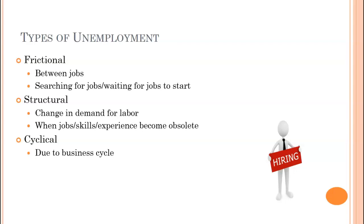Cyclical unemployment is due to the business cycle. During downturns there aren't enough sales, so employers let go of people hired last — that's typical cyclical unemployment. The last type is seasonal unemployment: the official unemployment rate is seasonally adjusted, so this isn't really taken into consideration. Examples include agricultural workers during the off-harvest season, teachers in summer, lifeguards in winter, or baseball players in the off-season.